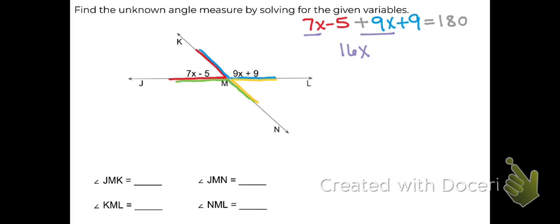There's also a negative 5 and a positive 9. Negative 5 plus 9 is positive 4. So we've combined our like terms on the left side, and on the right side, it's still just 180.